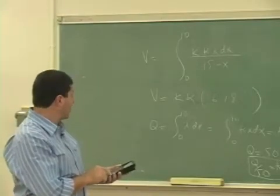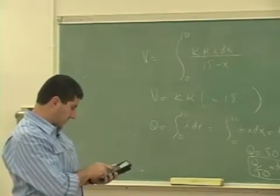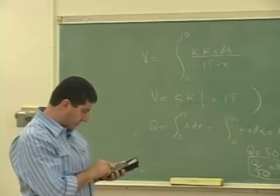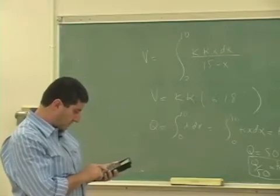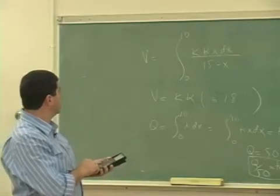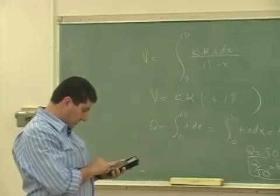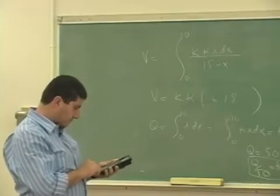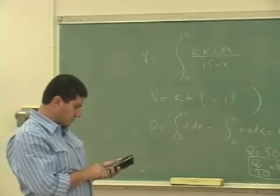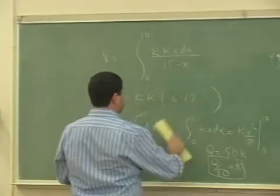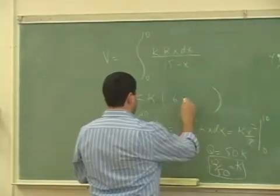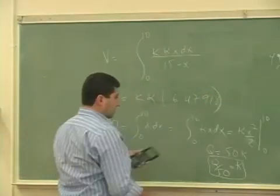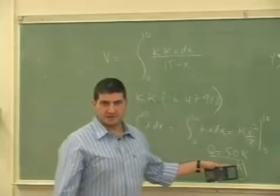x divided by 15 minus x. I should put parentheses here, parentheses, 15 minus x, comma x, comma 0, comma 10. 6.479, 1, 8. Again, this integral doesn't change, you see?